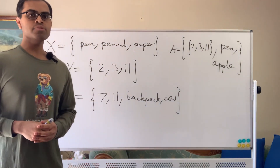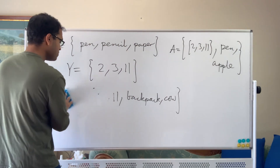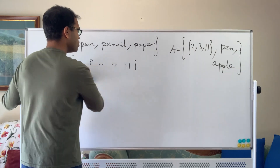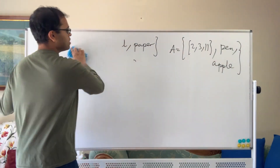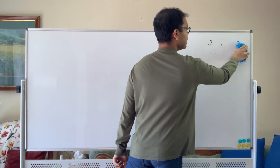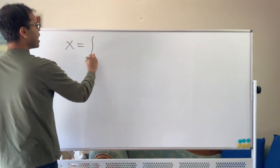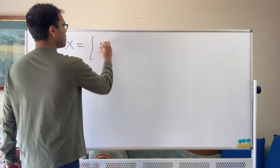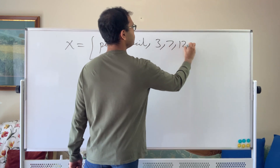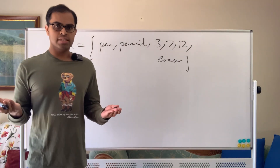When you have a set you can construct other sets. One particular way is by specifying a property that members of the set must satisfy. For example, if I take the set x consisting of pen, pencil, 3, 7, 12, and an eraser — just a random set — I can consider all the objects in this set that satisfy the property of being a number.